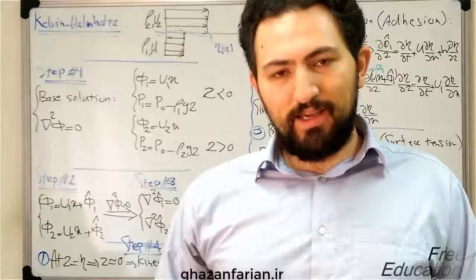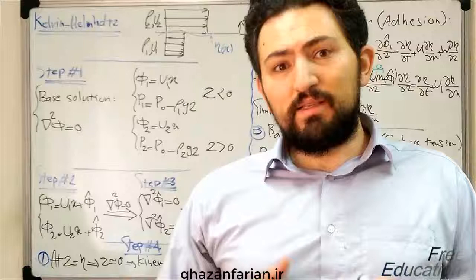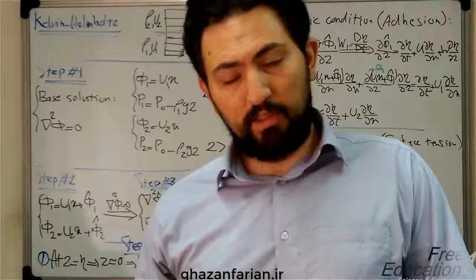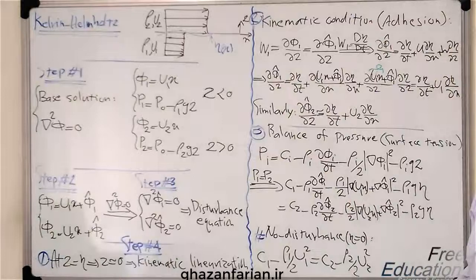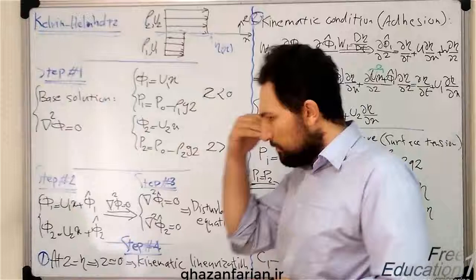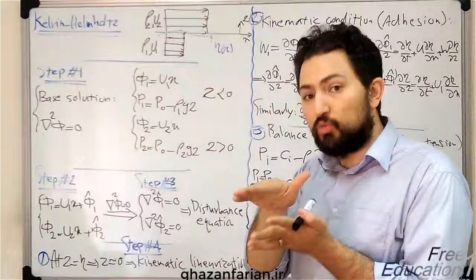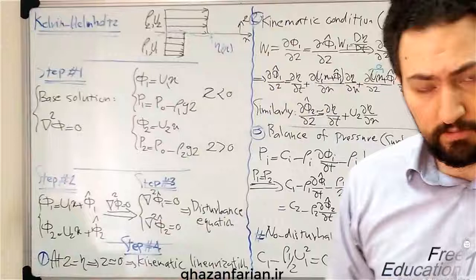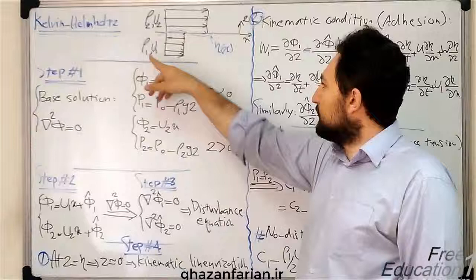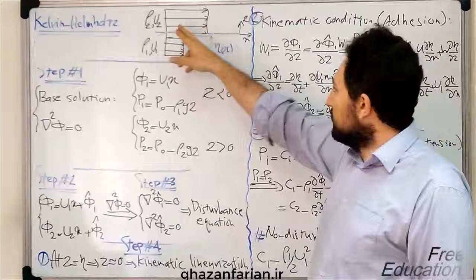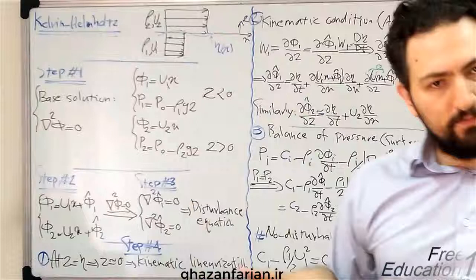Hi everybody, hope you are doing well. Thanks for watching my lectures. Today I'm going to talk about one of the simplest and most inspiring instabilities in fluid dynamics — the hydrodynamic instability known as the Kelvin-Helmholtz instability. The Kelvin-Helmholtz or KH instability is the instability analysis of the growth or decay of a disturbance appearing in the interface between two different streams, not necessarily different fluids, but with different velocities. We have two different densities or identical densities but different velocities.